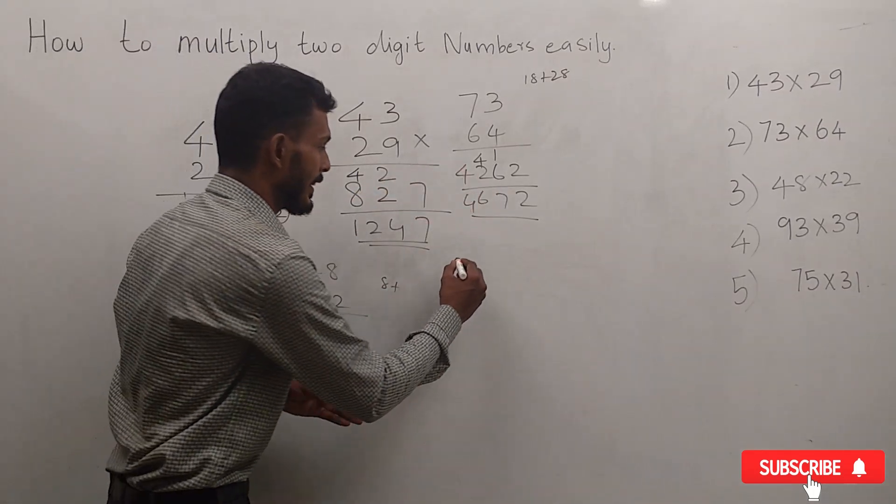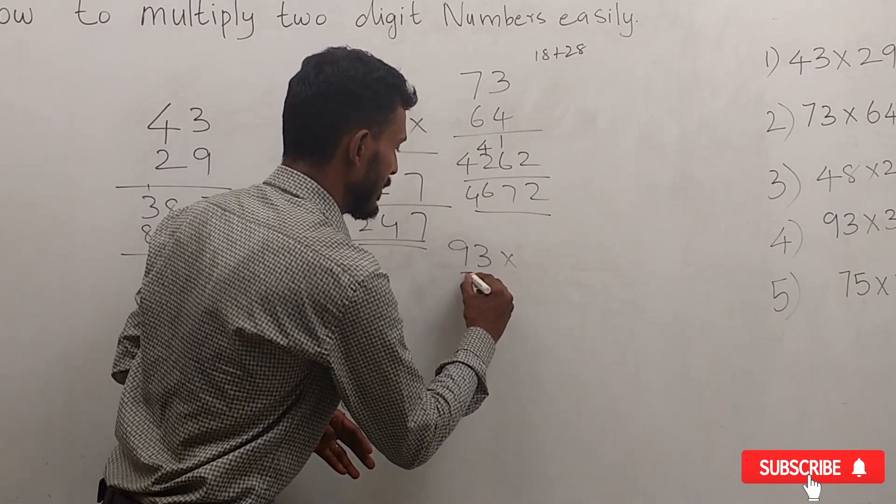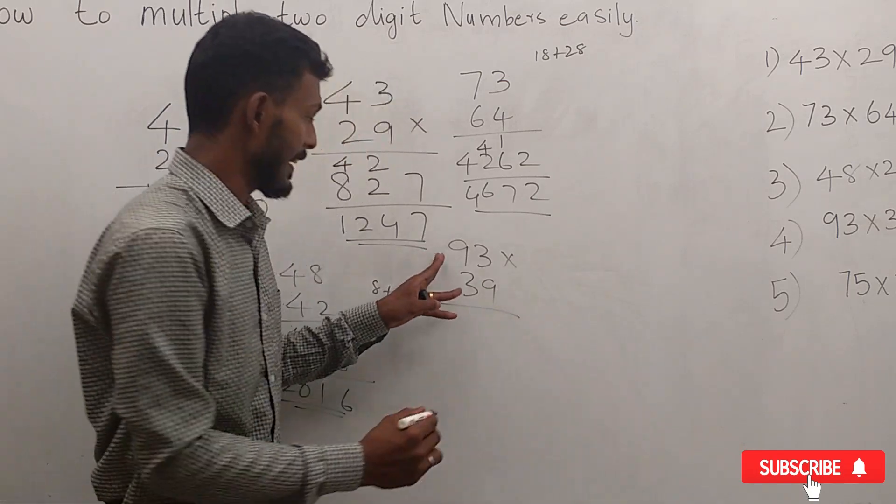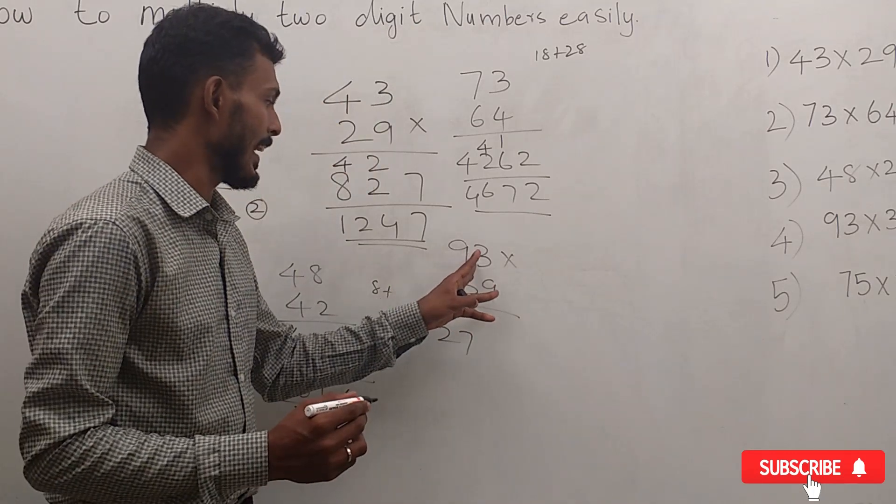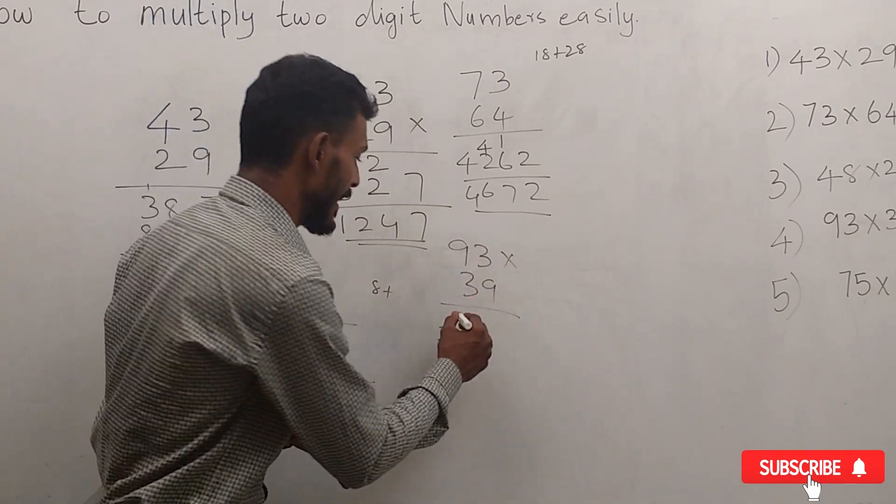For 93 × 39, we have 3 × 9 = 27. Then 9 × 9 = 81, plus 9 gives us 90.